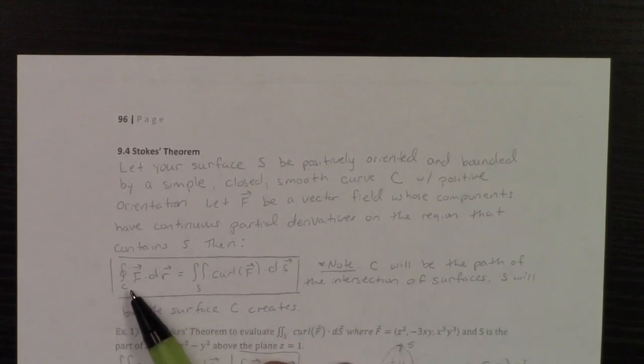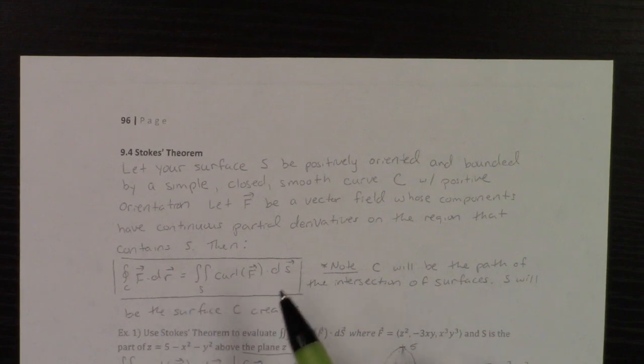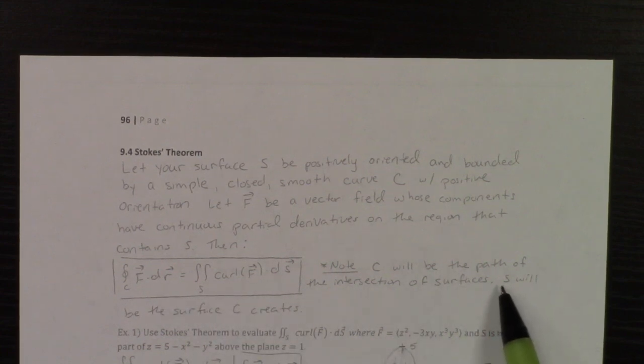But if they say use Stokes' Theorem to do the line integral, and you've got to do a double, they're going to give you a path, not a surface. And what S, that surface, is going to be, that surface will be the surface that that path creates.